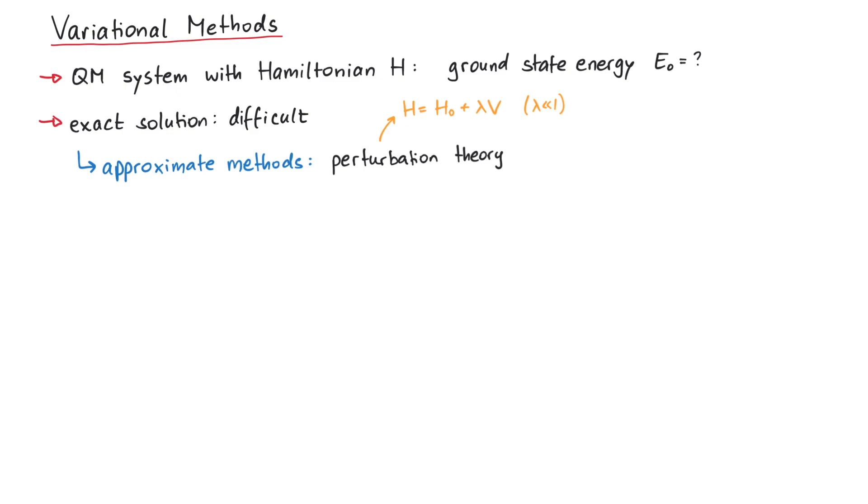H0 could be something like the harmonic oscillator or the hydrogen atom. However, if we cannot separate the Hamiltonian like this, perturbation theory won't help us. Instead, we can use a variational method.